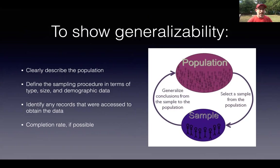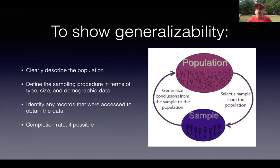Obviously, if I'm collecting data in a medical study and I'm recruiting people who meet certain criteria, that's a whole different game — I can look at people who started the study and people who completed it. But completion rate is really important, even in internet-based research where I'm sending out a Qualtrics survey. I don't know how many people saw the survey, but I do know how many people opened up the email and chose to complete it, or at least started it, and then chose to complete it or not.